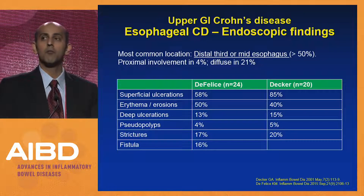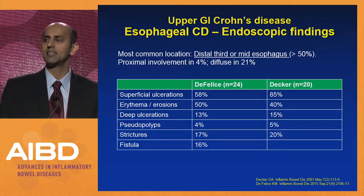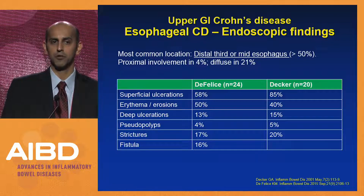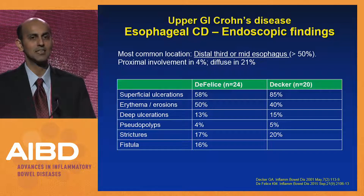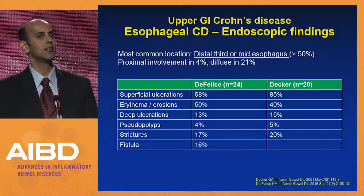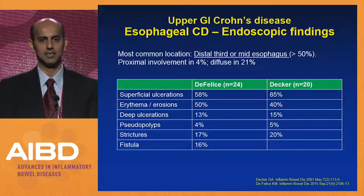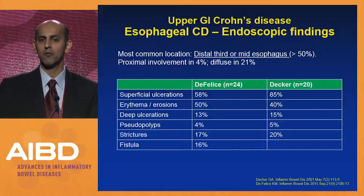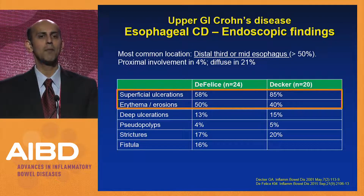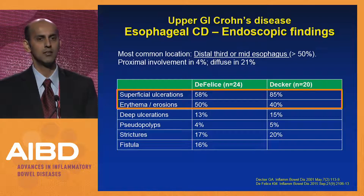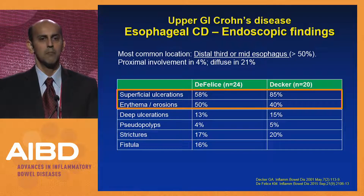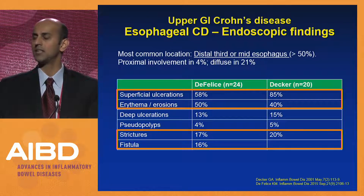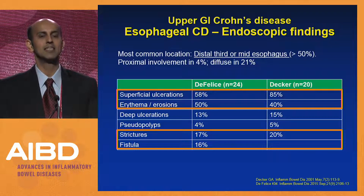The most common location of involvement in esophageal Crohn's disease is either the distal third or mid-esophagus — over 50% of patients have involvement at one of those two sites. Isolated proximal esophageal involvement is less common at 4%, whereas diffuse panesophageal involvement was seen in just under a quarter of patients. Two small series from the Mayo Clinic showed about half the patients had superficial ulcerations or erythema and erosions, and about one-fifth presented with strictures — and in some cases fistulas, including tracheoesophageal fistulas.